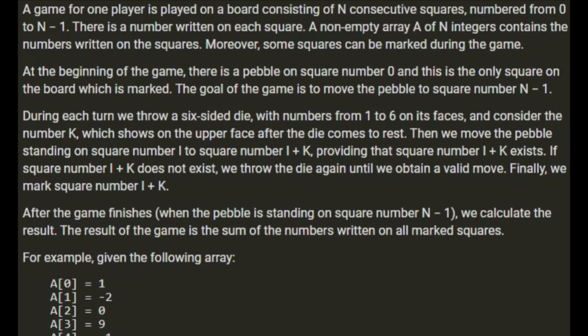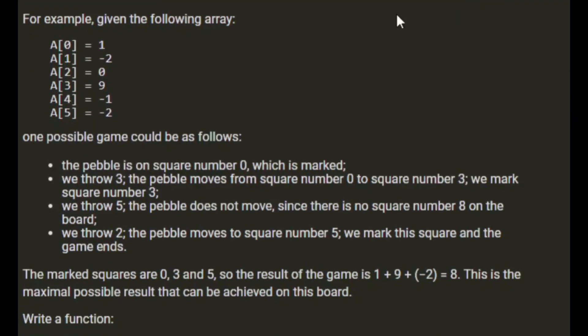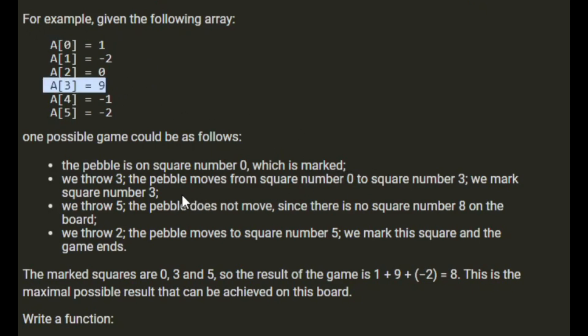After the game finishes, when the pebble is standing on square number n minus 1, we calculate the result. The result of the game is the sum of the numbers on marked squares. For example, consider this game here. One possible game could be as follows: the pebble is on square number zero which is marked. We throw three, the pebble moves from square number zero to square number three. We mark square number three.